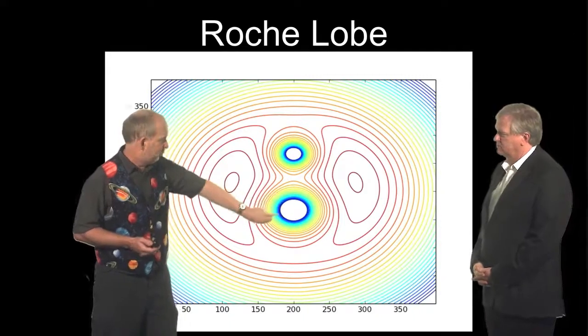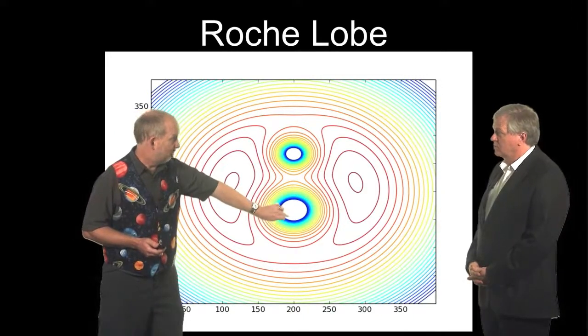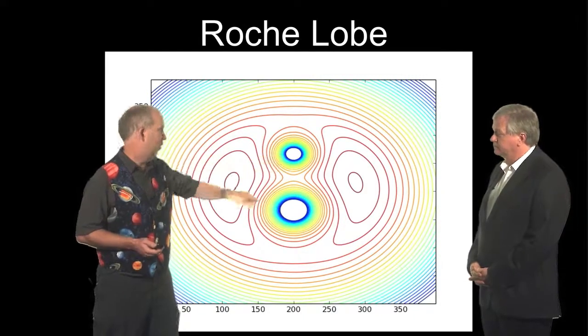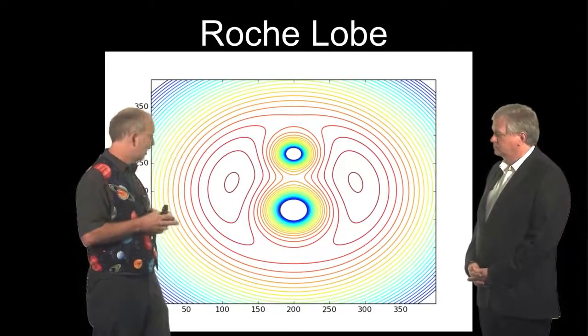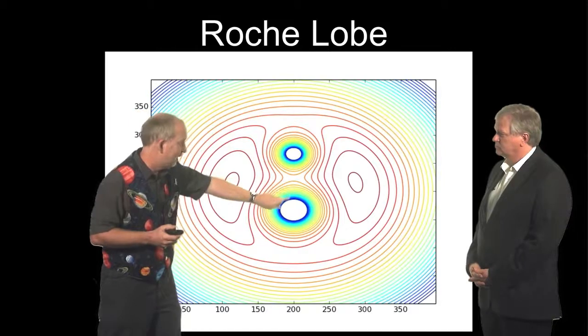So this is the bigger potential well. So that's presumably where the white dwarf is. And this is presumably where the red star is. And we just talked about it. Maybe it swells up at the end of its life and the gas is going to leak out. And where's it going to leak? It's going to leak across the saddle and come down here.